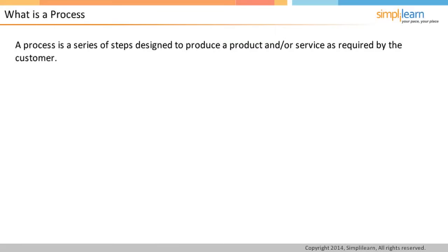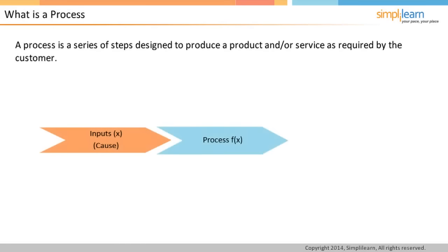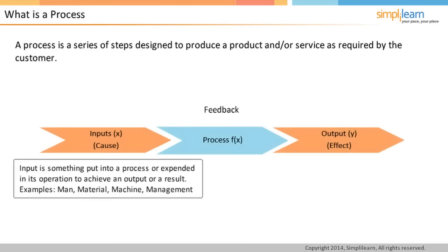A process is a series of steps designed to produce a product and/or service according to the requirement of the customer. A process mainly consists of four parts: input, process steps, output, and feedback. Input is something put into a process or expended in its operation to achieve an output or result. For example, man, material, machine, and management.